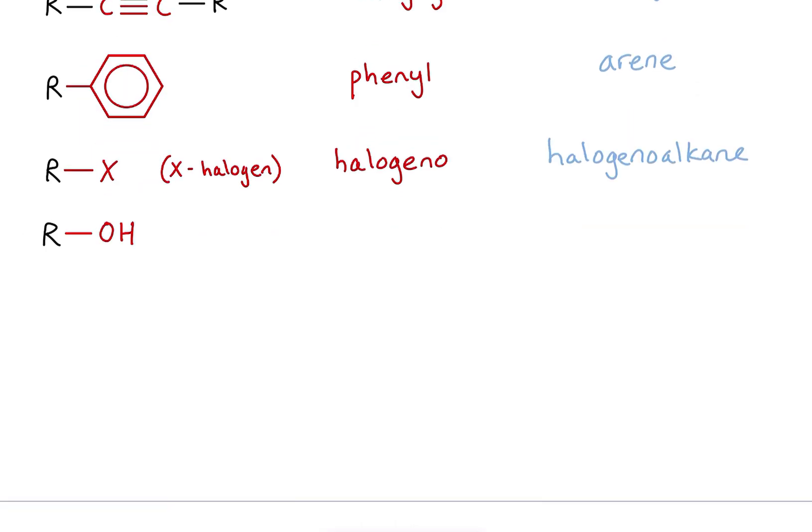Here we've got an OH bonded to the rest of my molecule. This is known as the hydroxyl functional group, and if I see something with the hydroxyl functional group, it belongs to the alcohols.